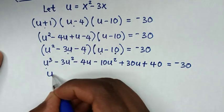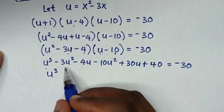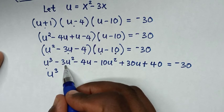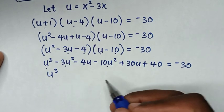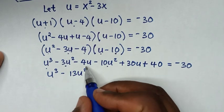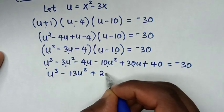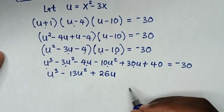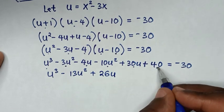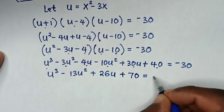Collecting terms: u³-13u²+26u+40 = -30. Moving -30 to the left side: u³-13u²+26u+70 = 0.